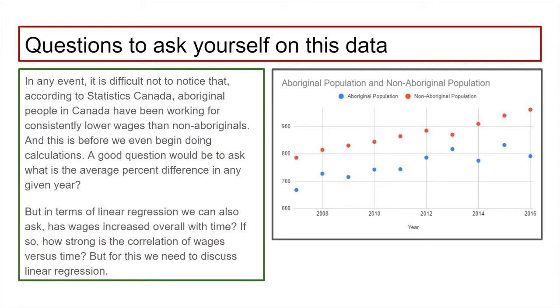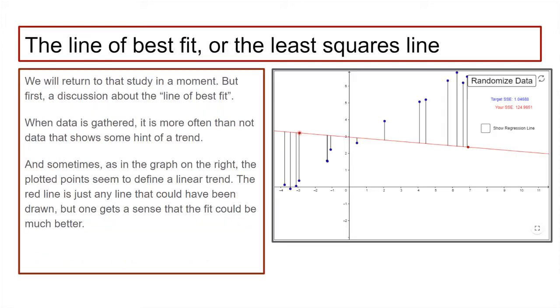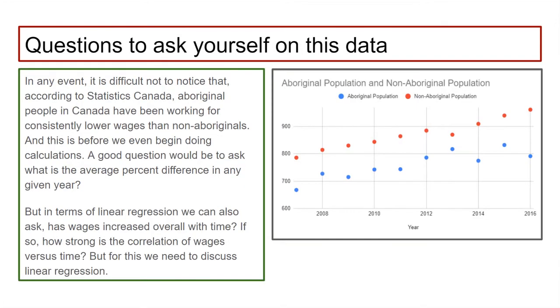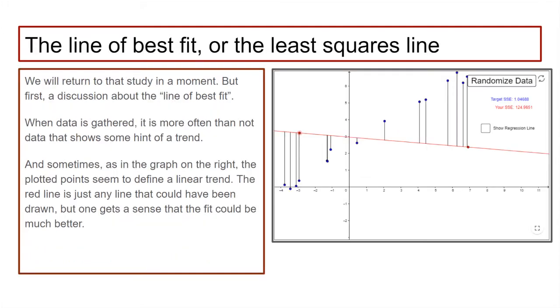One kind of gets a sense by looking at the data that that's true. And of course, we would like to know how strong the correlation of wages versus time actually is. But for this, we need to discuss linear regression. So we're going to move away from this example for a while. We're going to return on the last one or two slides of this presentation to the Aboriginal example. So we have this line of fit or least squares line. All data that's kind of scattered about, you can imagine drawing the best line you could with a ruler going through the data.